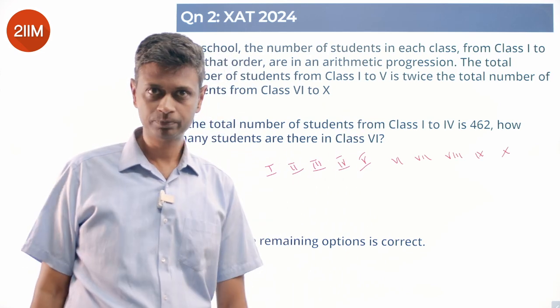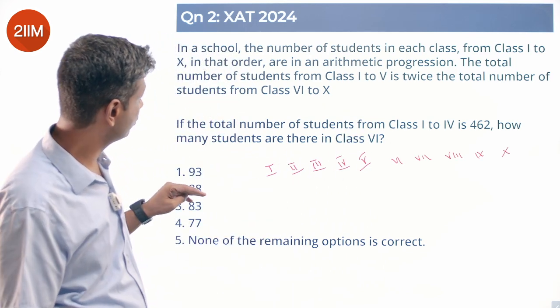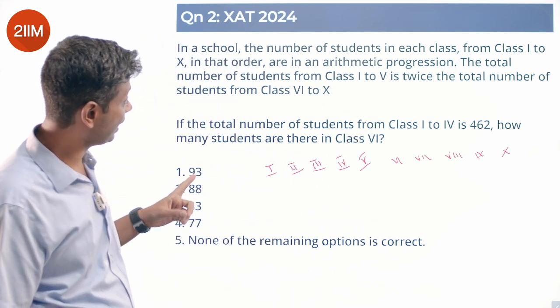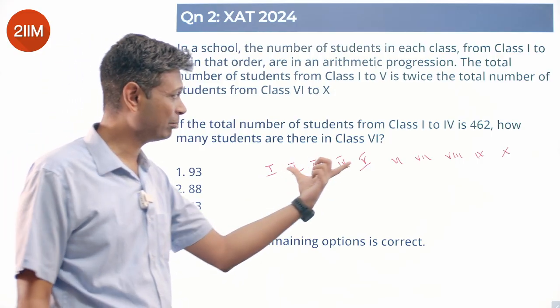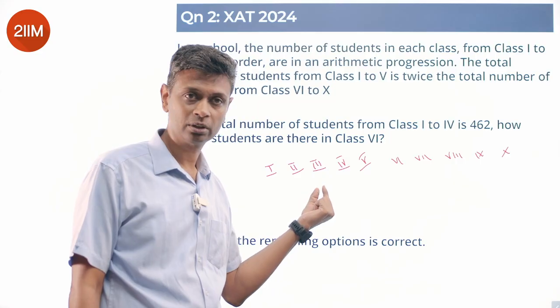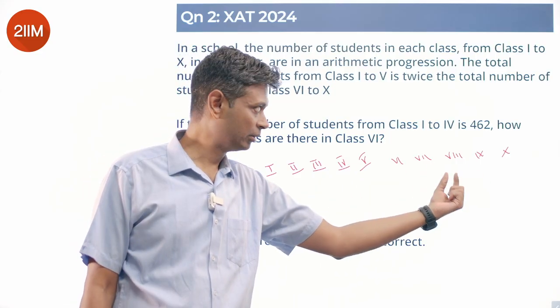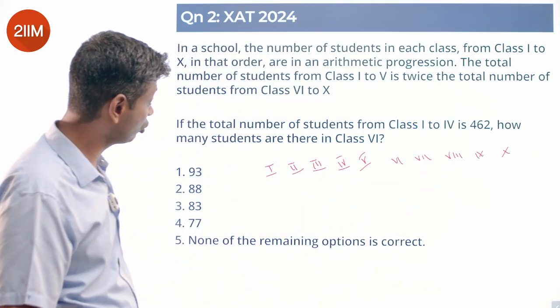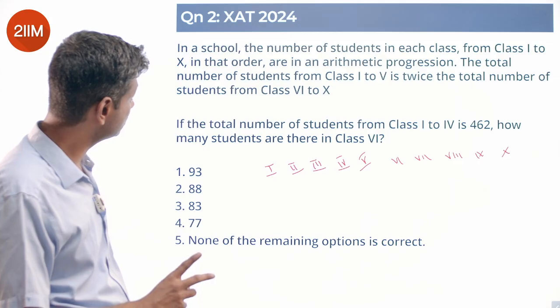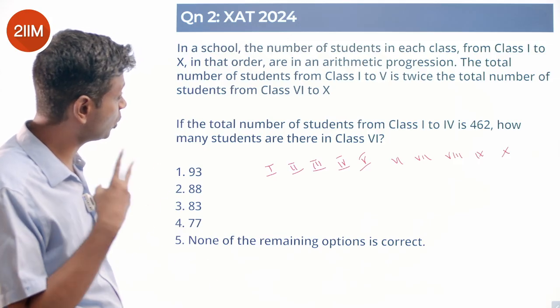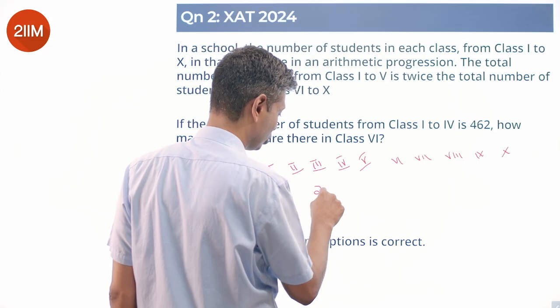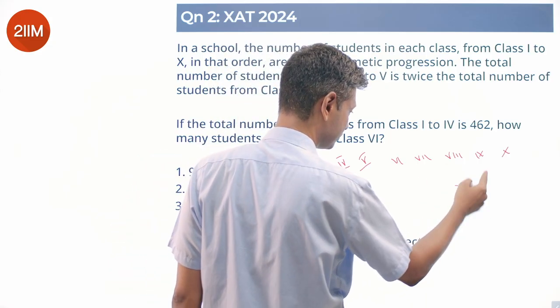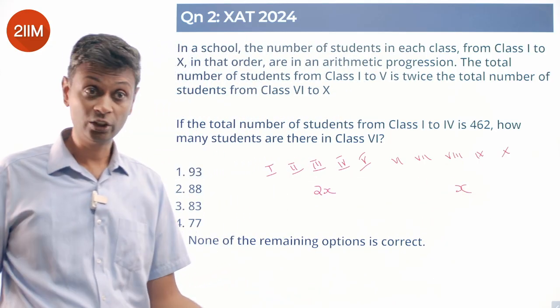This is going to be an AP. The total number of students from class 1 to 5 is twice the total number of students from 6 to 10. This AP sum of all this. So if the sum from 6 to 10 is x, then the sum from 1 to 5 is 2x.